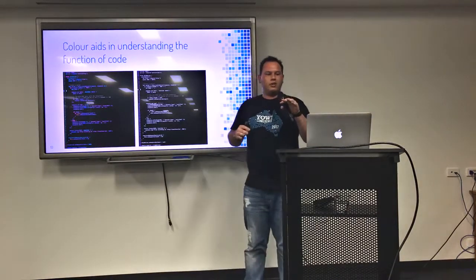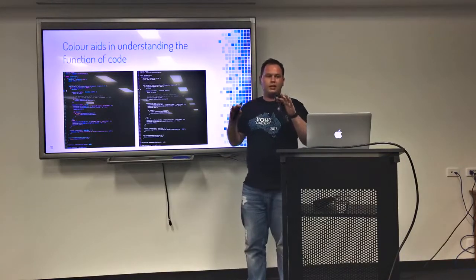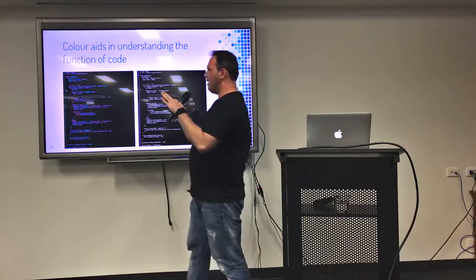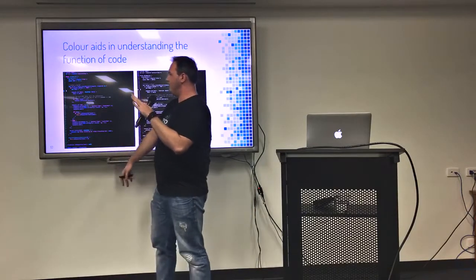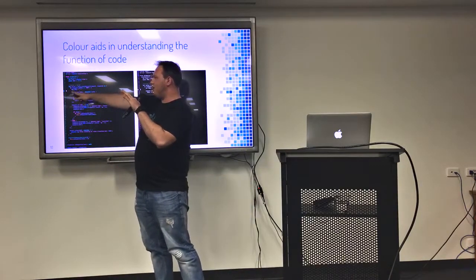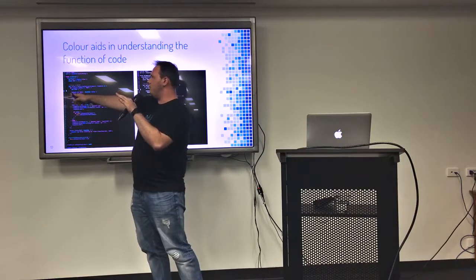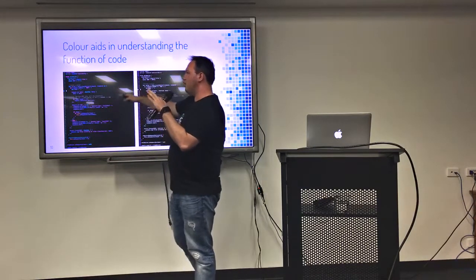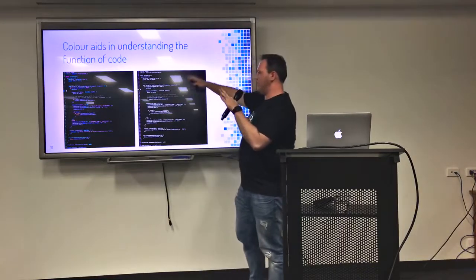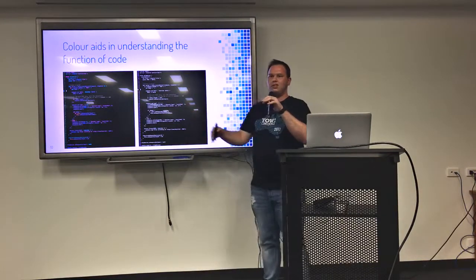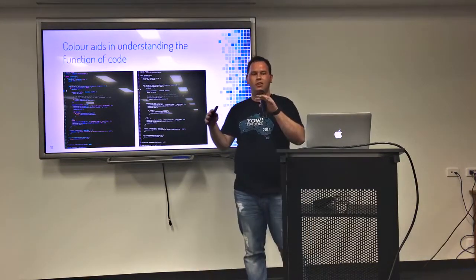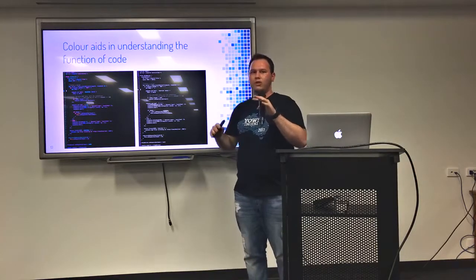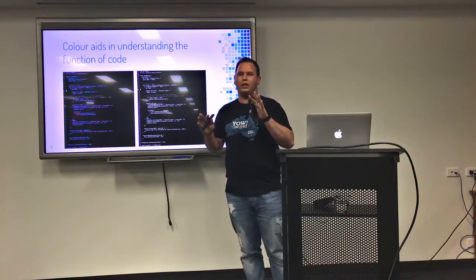One of the things I found was that color aids in understanding the function of code. Even at a small size, we can roughly see that let statements have an aqua color, ifs are magenta, and so on — versus having everything the same color. So even if you're not reading it, you have a pretty rough idea of what the structure of the code you're looking at actually is.